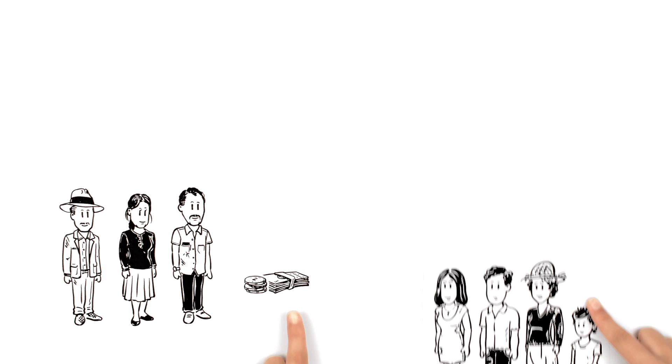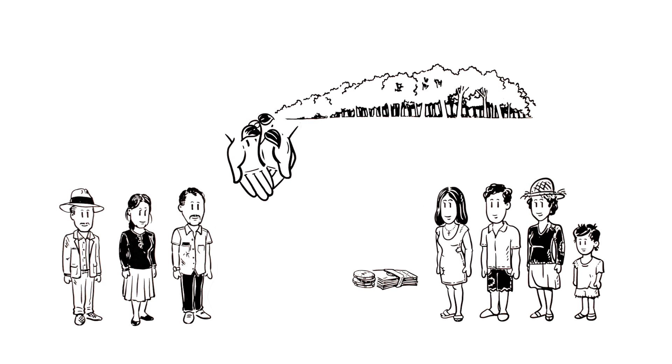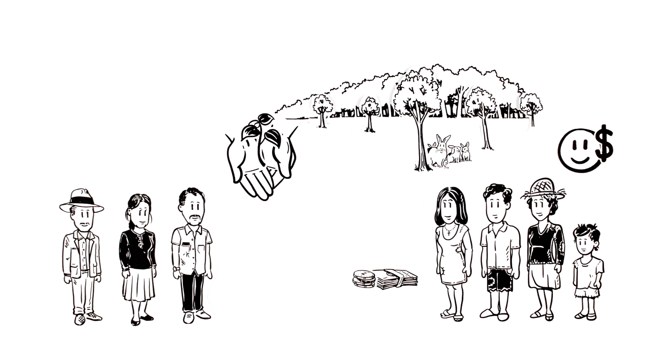For example, downstream villagers can pay those who cut down trees to plant new trees and take care of the forest instead. This allows them to continue earning a living while improving the environmental conditions of their communities without damaging other communities.